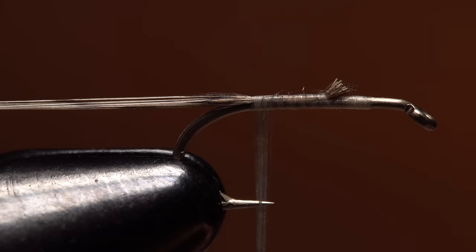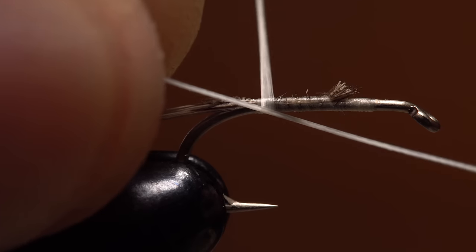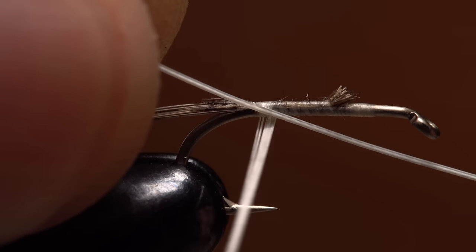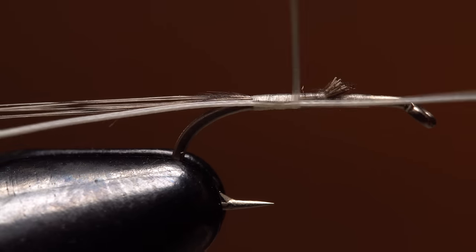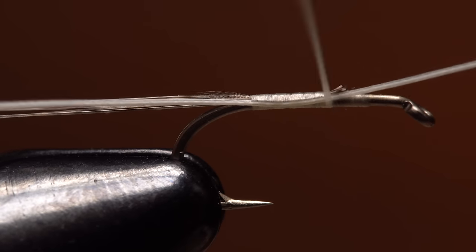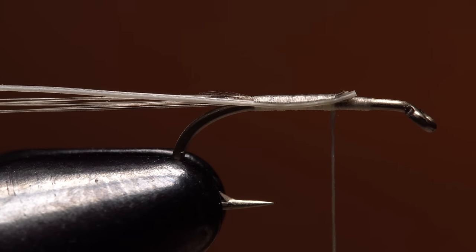Retrieve one of the stripped hackle stems from the water bath. Place its tip end against the near side of the hook and begin taking thread wraps to secure it. Continue making nice smooth even thread wraps up the hook shank to about the two thirds point. Once there, snip the excess tip end off close.